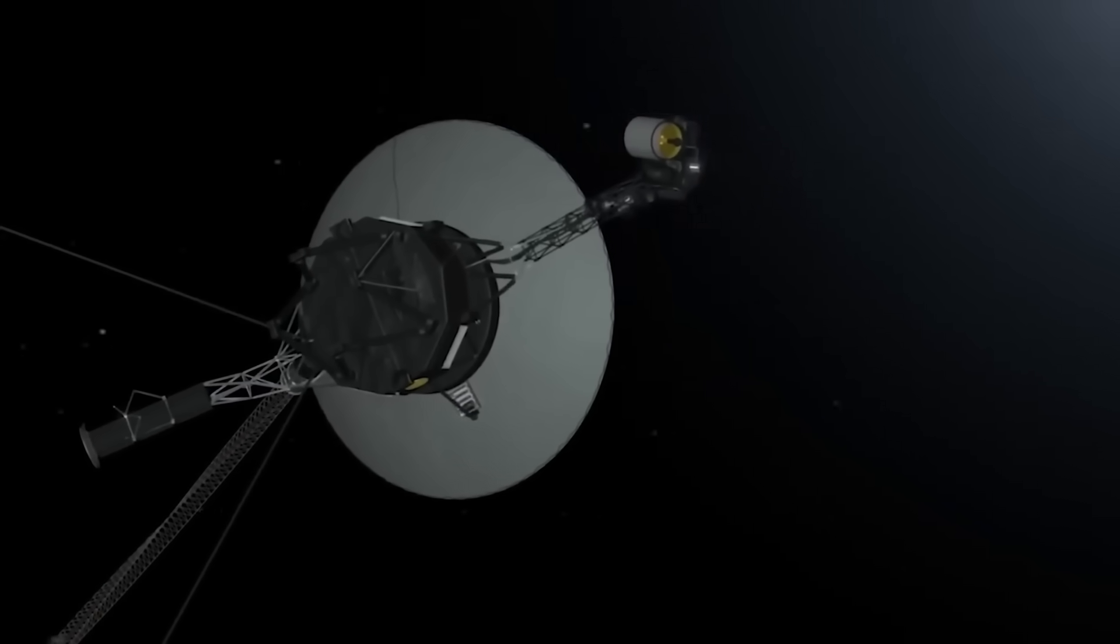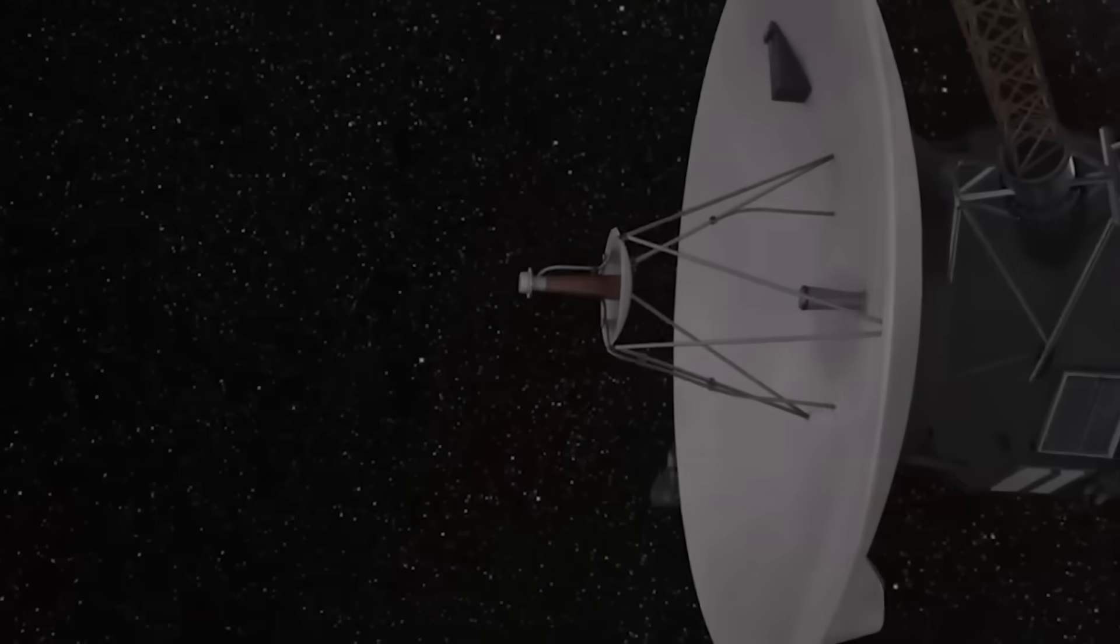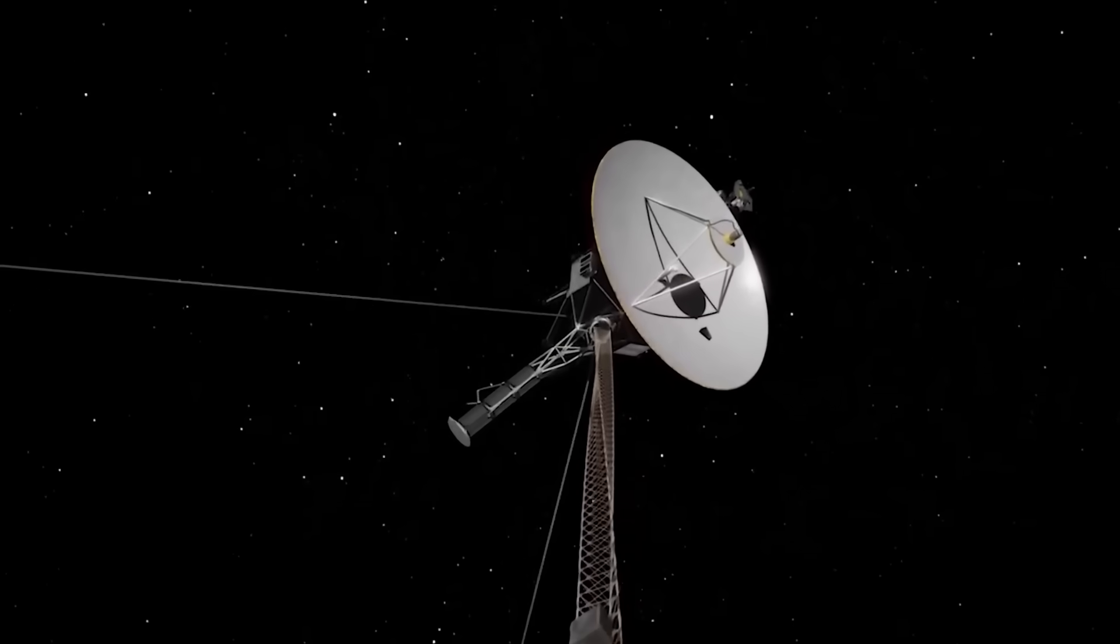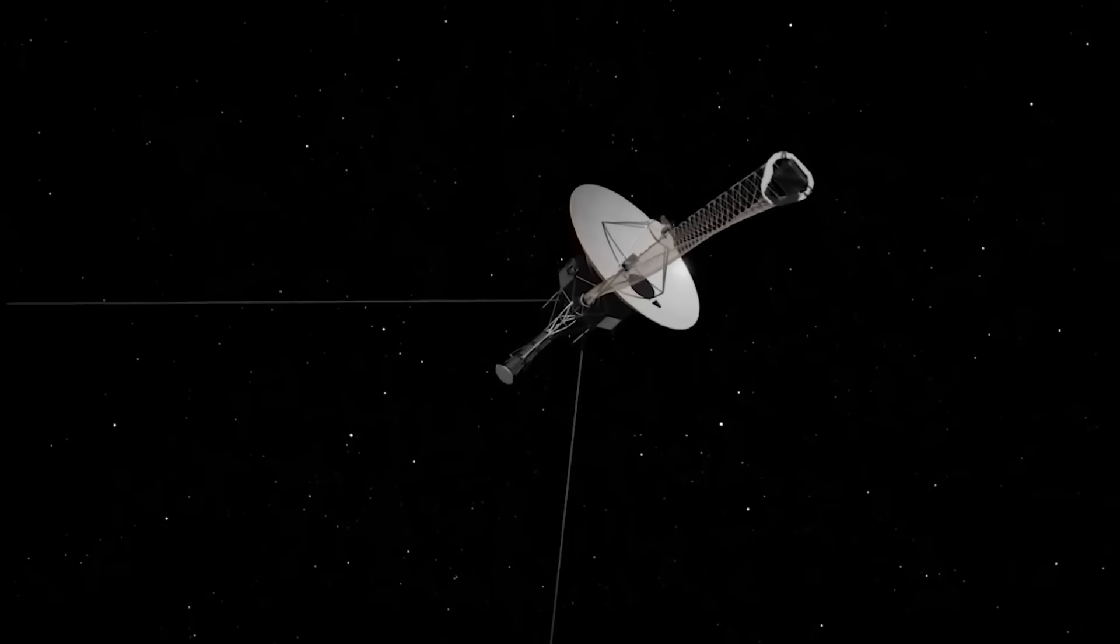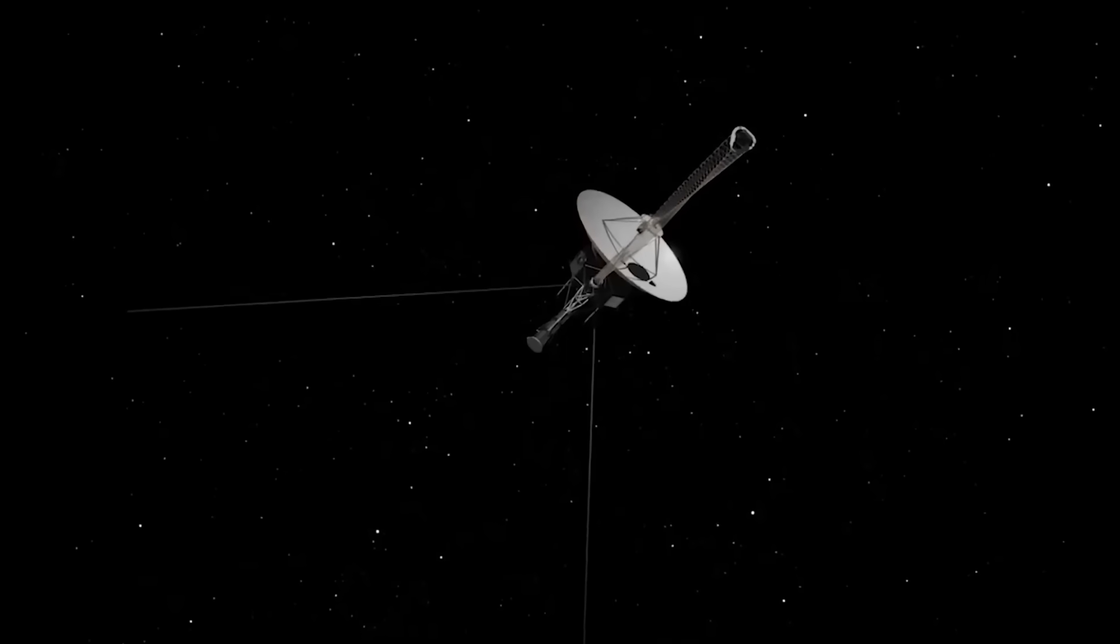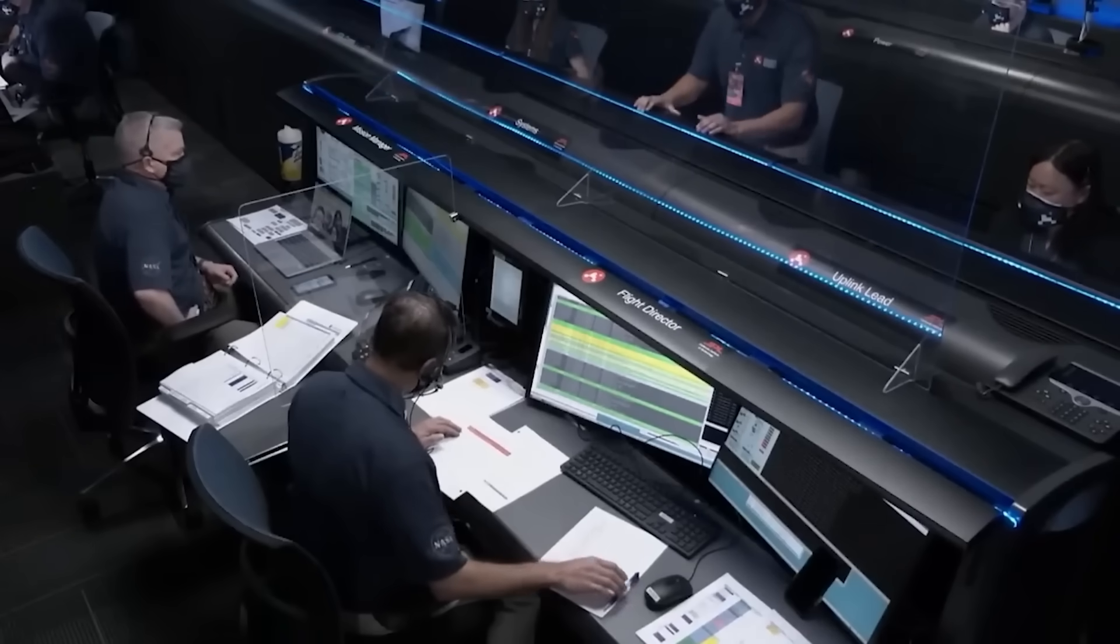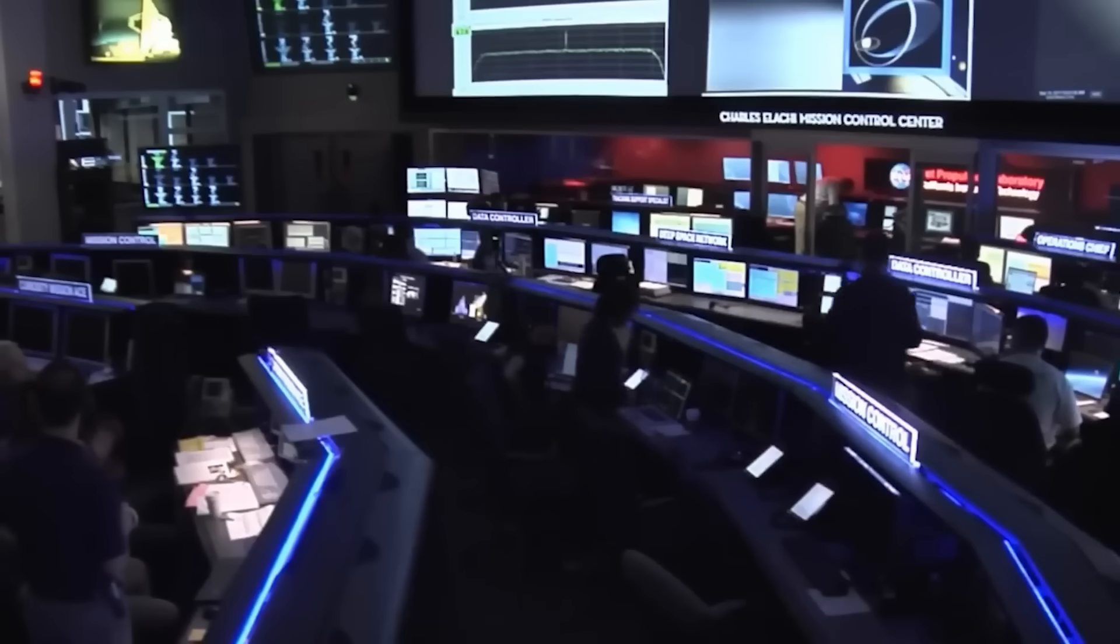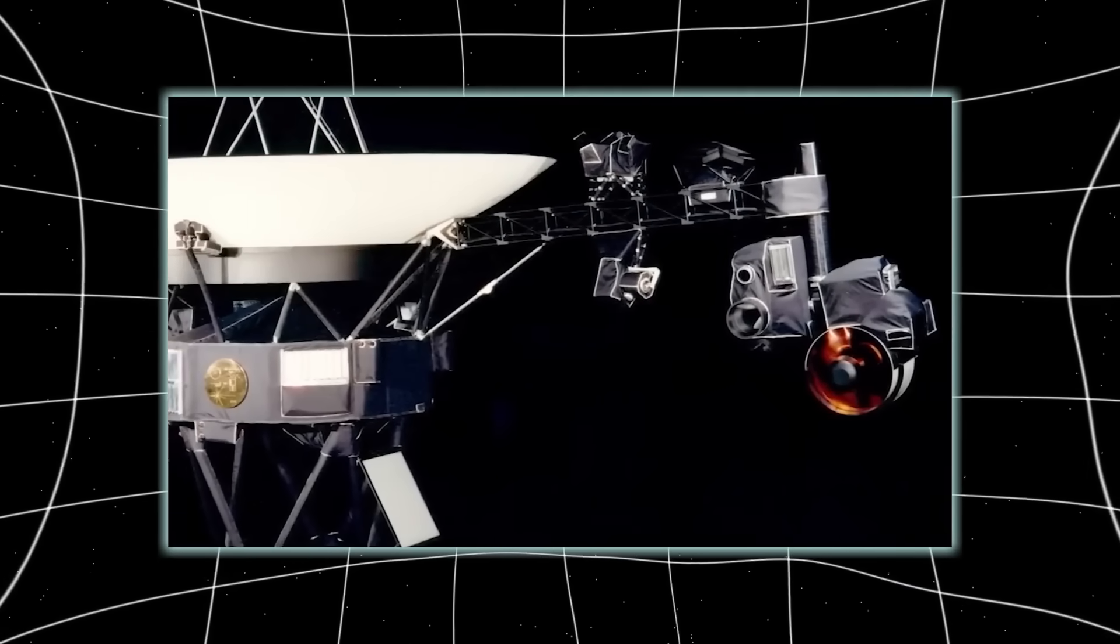For decades, the idea of the heliosphere was considered theoretical. A bubble of magnetic and plasma energy shaped by the solar wind. But Voyager 2 showed it wasn't just theoretical. It was vital. Inside this shield, conditions are relatively stable. Radiation is filtered, space weather is manageable, and cosmic rays are diminished. But the moment Voyager 2 stepped out, all of that changed. The data showed intense particle energy, chaotic magnetic flux, and dangerous levels of galactic radiation.